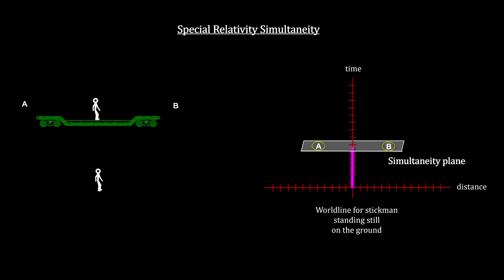The plane containing A and B contains all the points that are simultaneous for the person on the ground at the time of the two strikes. We call this the simultaneity plane.